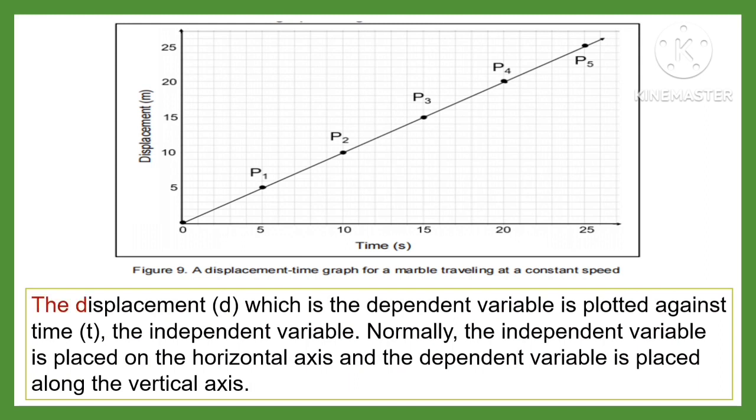is plotted against time T, the independent variable. Normally, the independent variable is placed on the horizontal axis and the dependent variable is placed along the vertical axis.